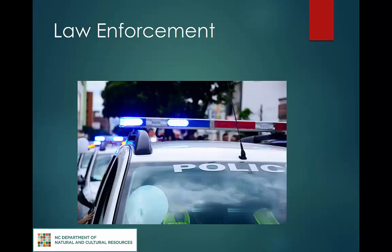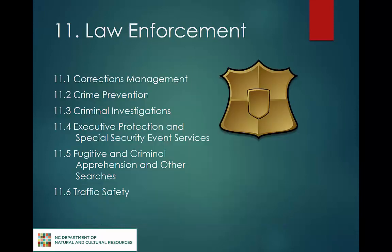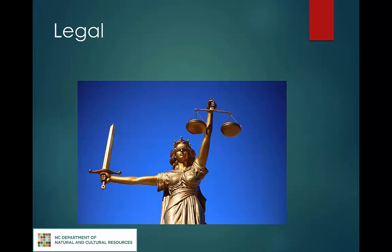Law enforcement records document the efforts of state agencies to protect the lives and property of the state's citizens and people who visit and work in the state, as well as to supervise adults and juveniles sentenced after conviction for violations of North Carolina law. Corrections management encompasses adult and juvenile offender records. Crime prevention includes intelligence reports and sex offender registries. Criminal investigations covers case files and crime reports. Executive protection and special security event services encompasses security for dignitaries and special events. Fugitive and criminal apprehension and other searches includes all points bulletins and missing persons reports. Traffic safety includes collision reports.